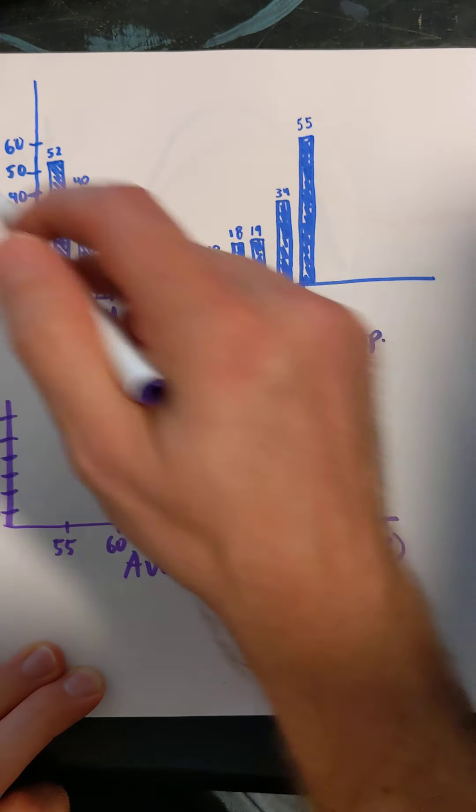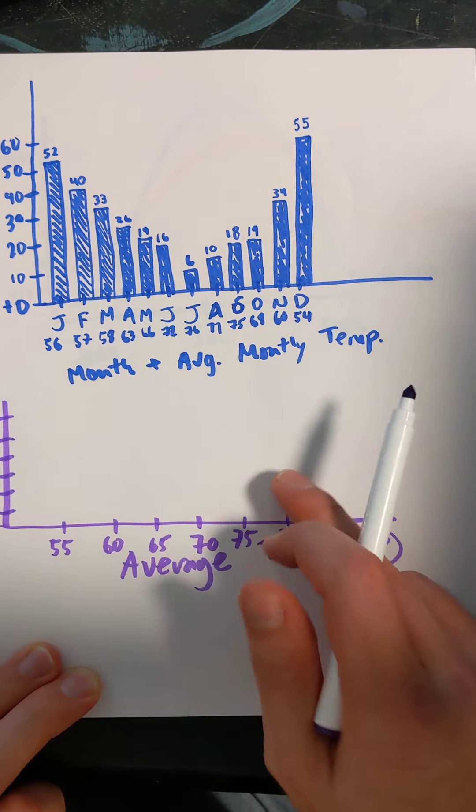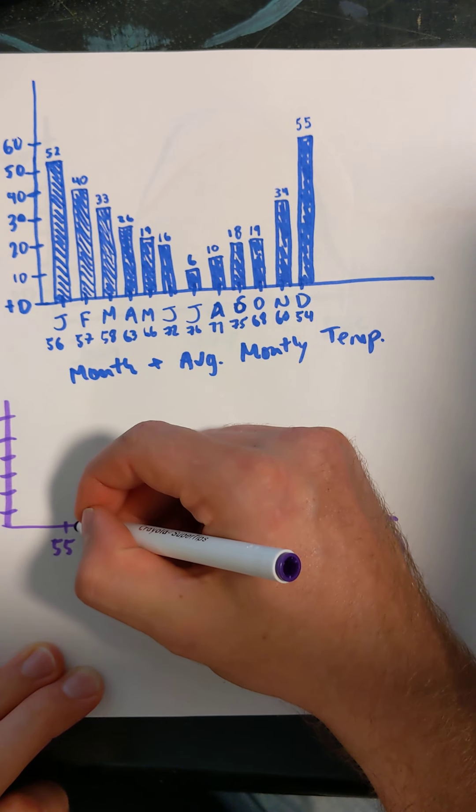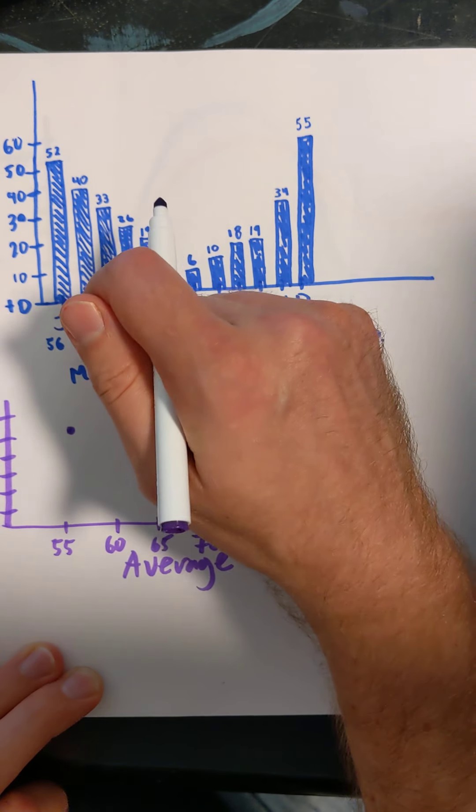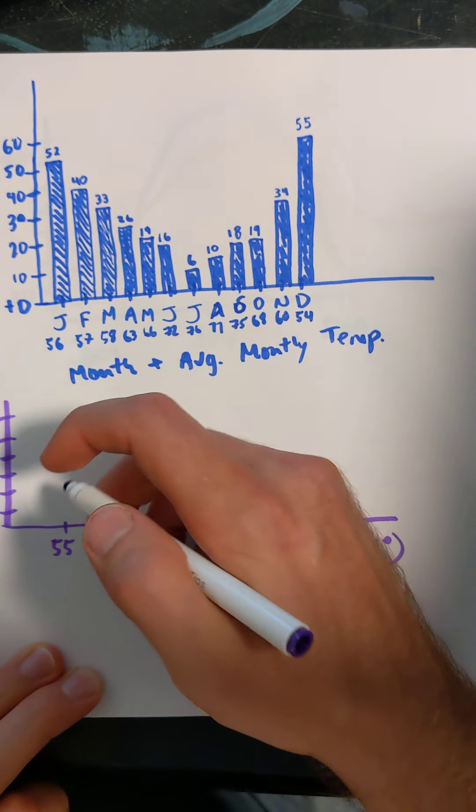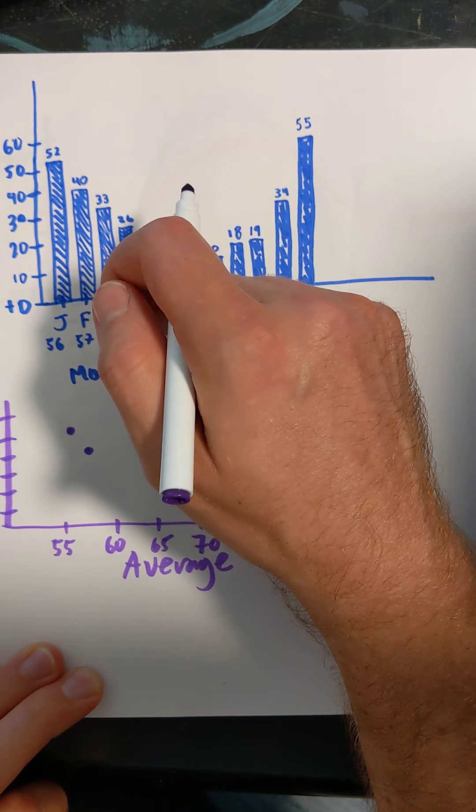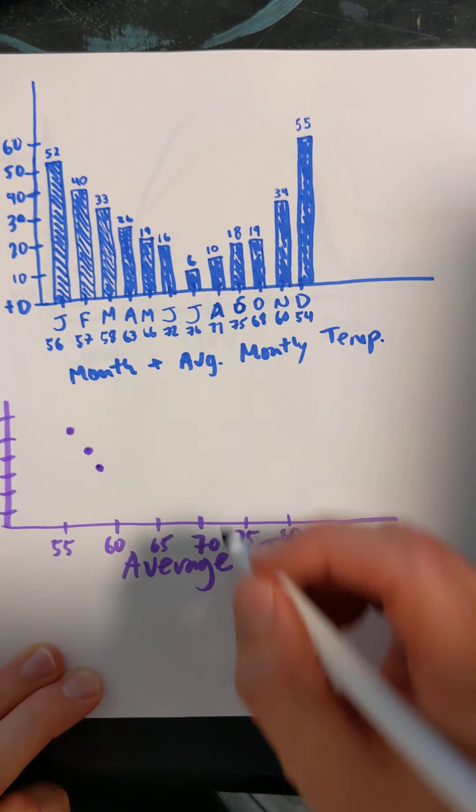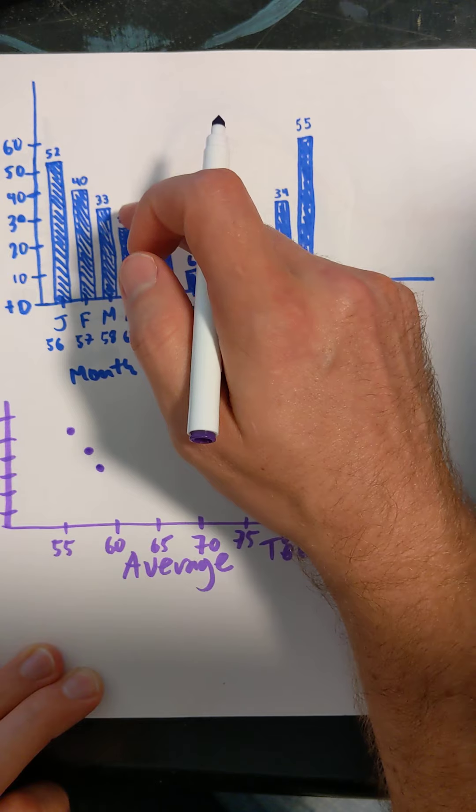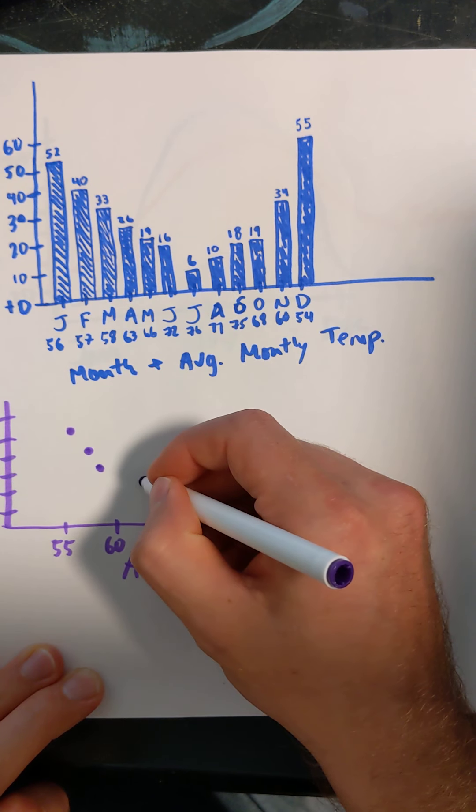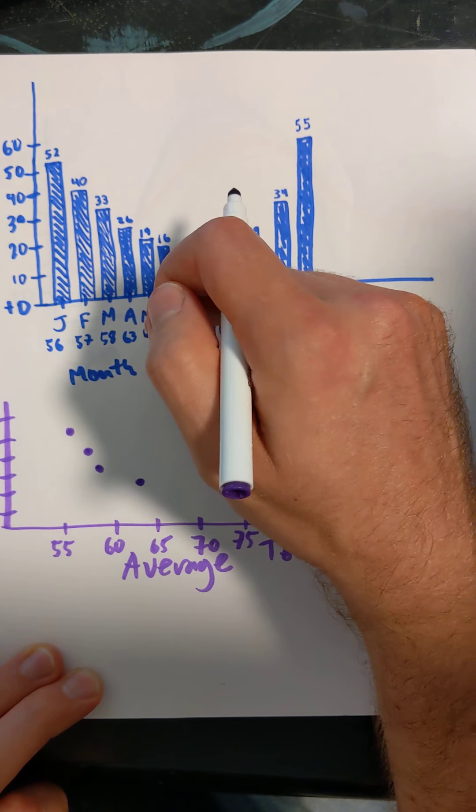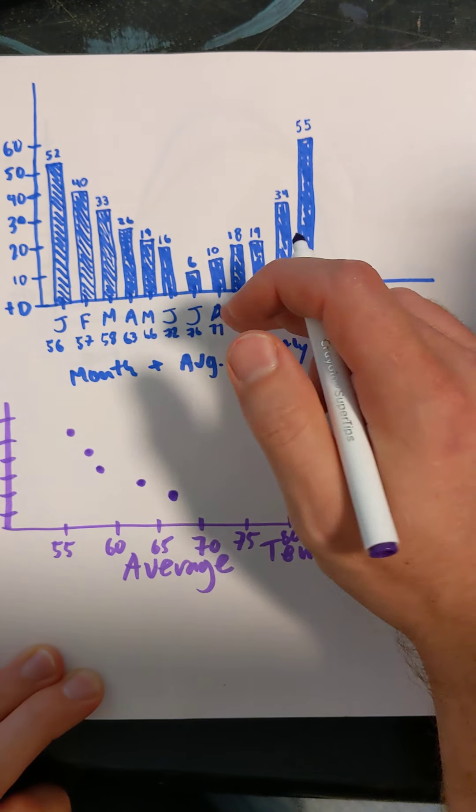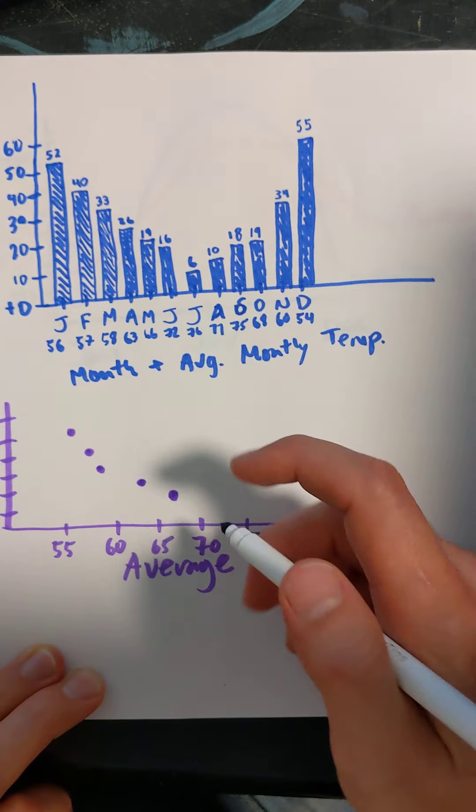Alright, and then I'm just going to start graphing all of these points onto this graph. So 56 degrees goes with 52 therms. So 56 is right here, up to 52 therms. 57, 40 therms. So it's going to be a little bit farther over, and there's 40. 58 degrees, 33. 58 is probably around here. There's 33. 63, 26. 63 would be here. 26 would be about here. 66, 19. That's somewhere in there. 72, 16. 72, 16.